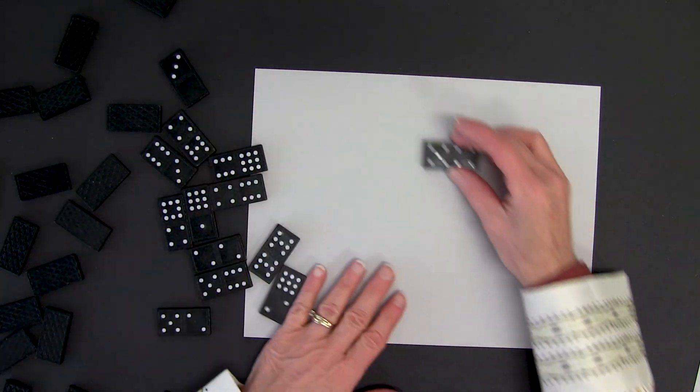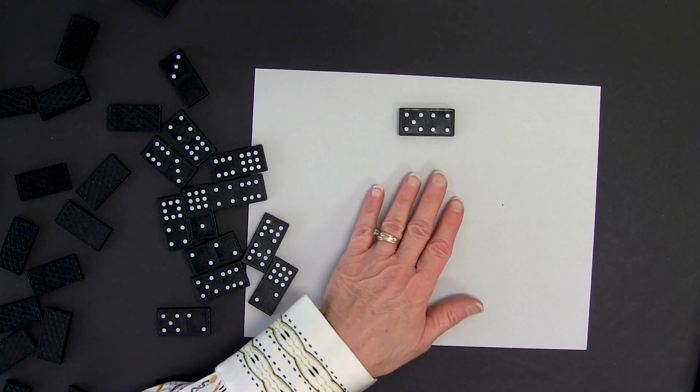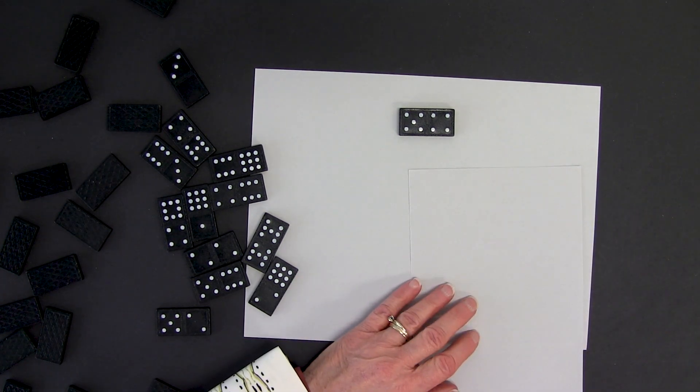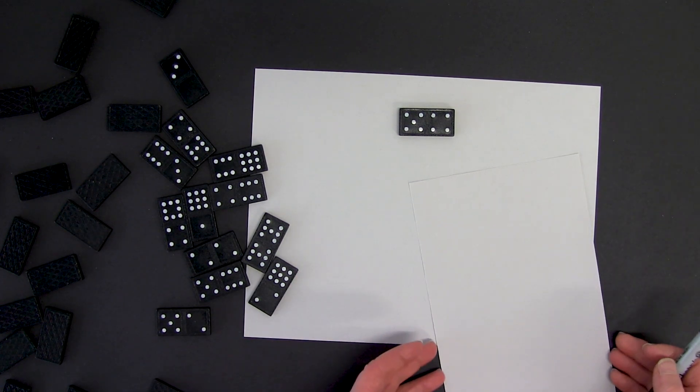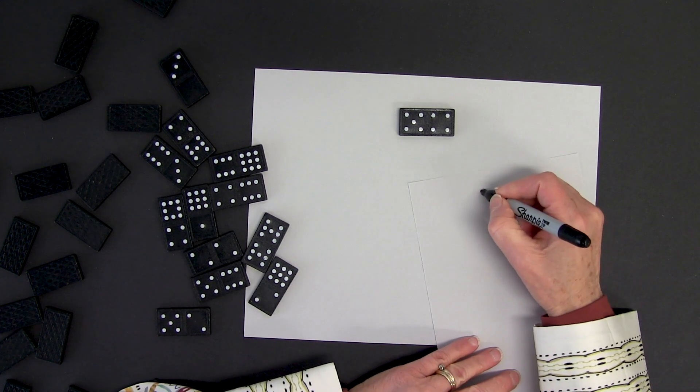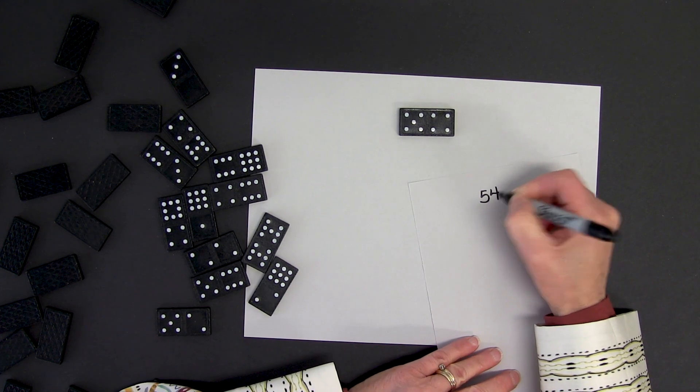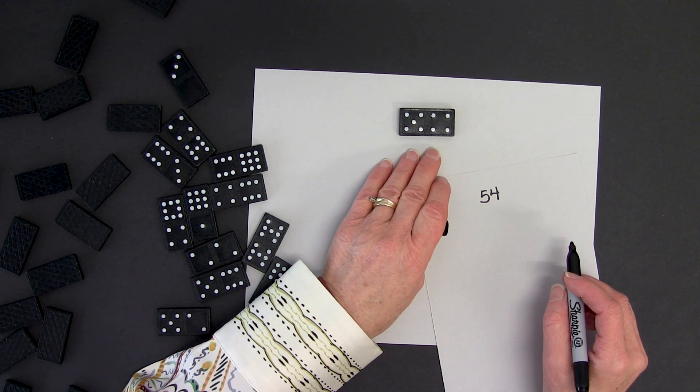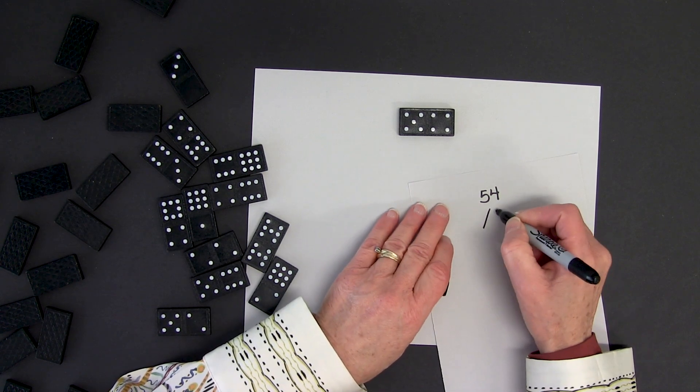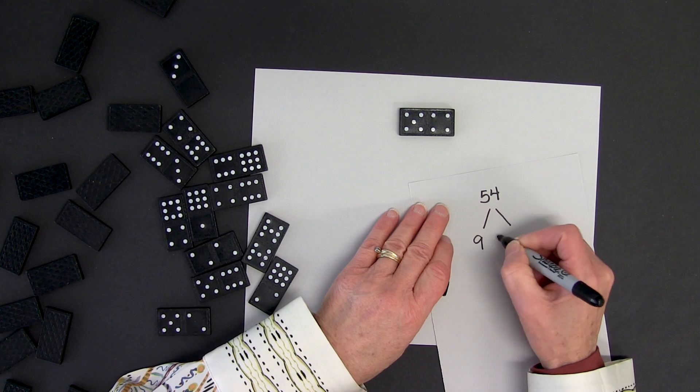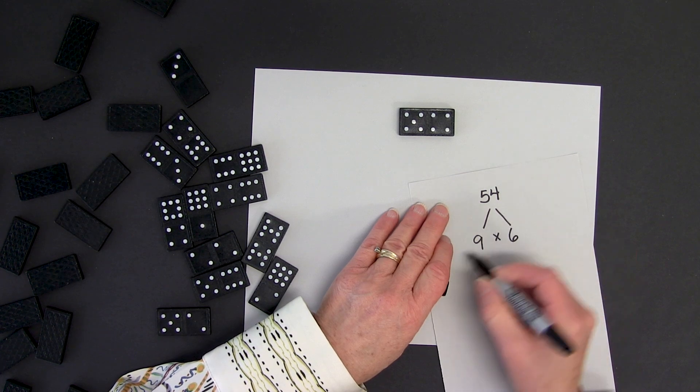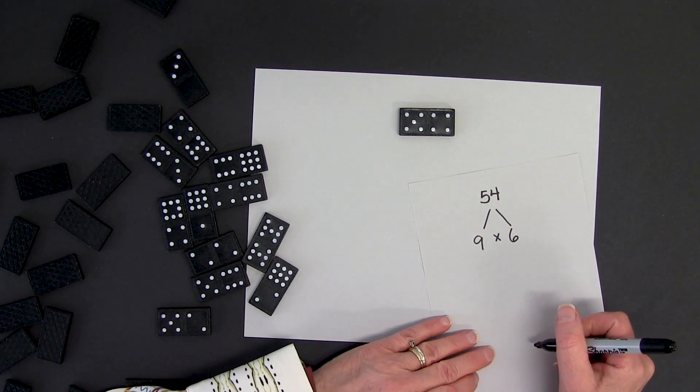What I can do is I can factor 54. To start, I will think of two factors for 54. Well, I know that 9 and 6 multiply together to give me 54.